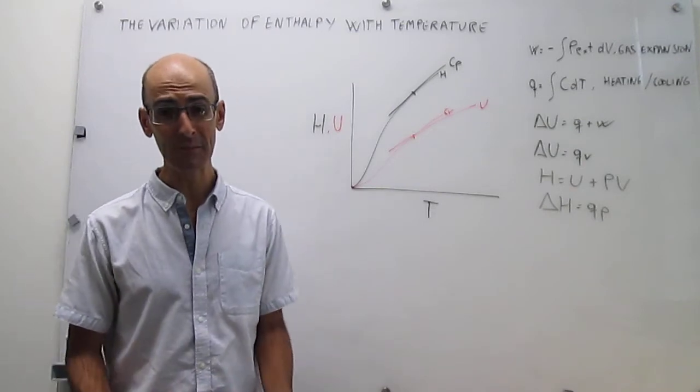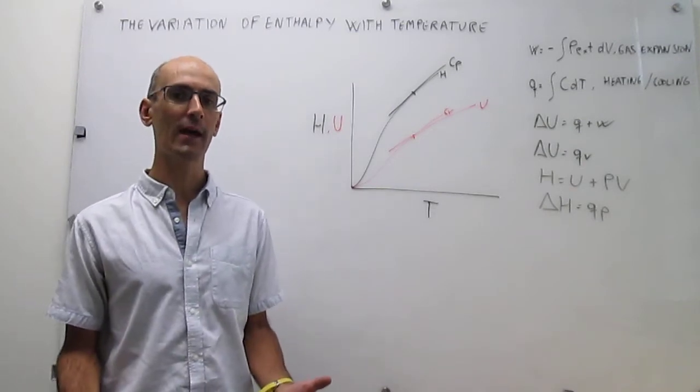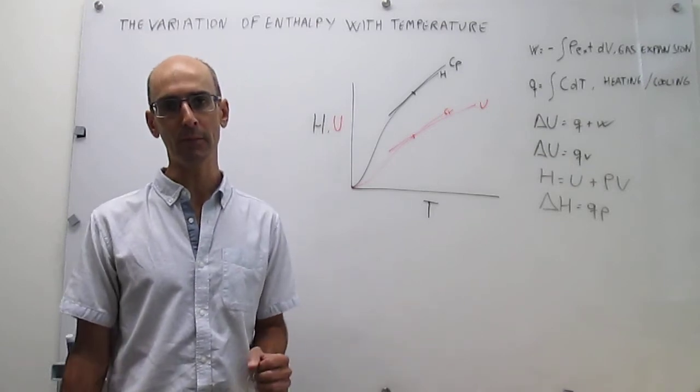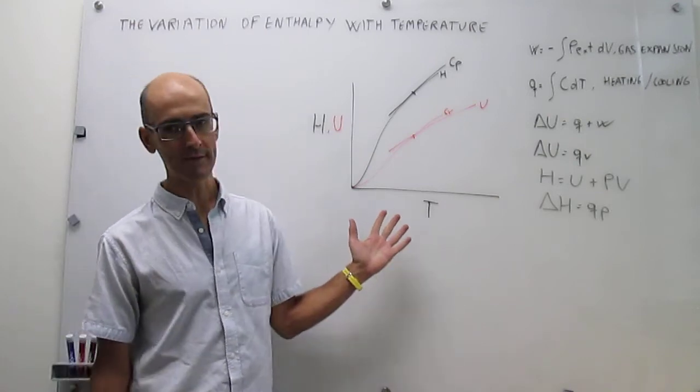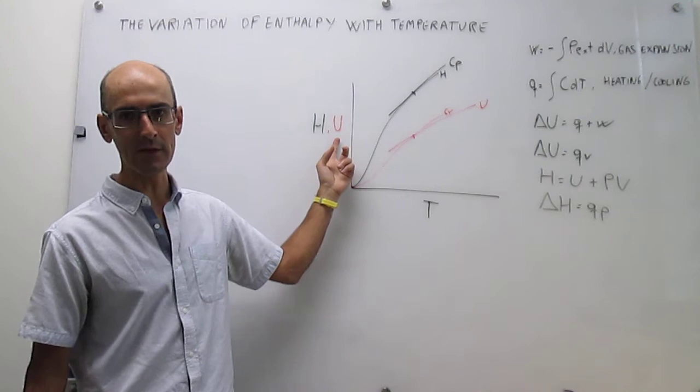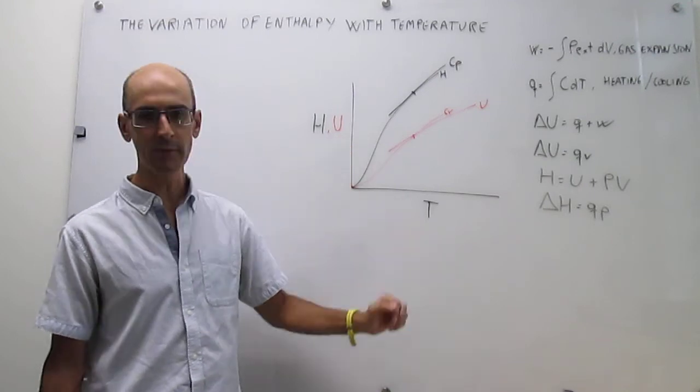As a matter of fact, we have seen that if we track how either the internal energy or enthalpy depend on temperature, we get graphs that look like this. Here we have the function, either enthalpy or internal energy, and this is the variable temperature.